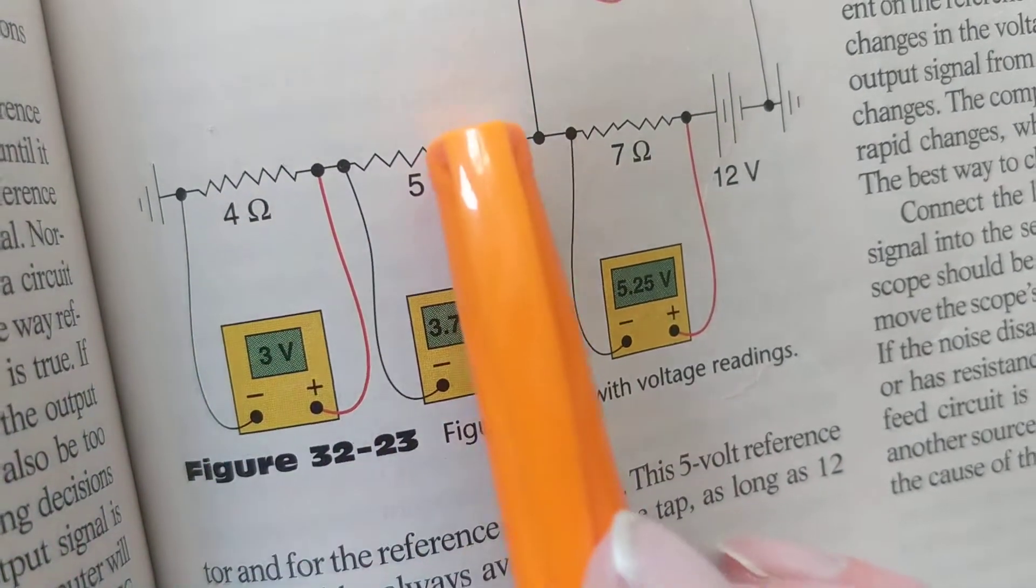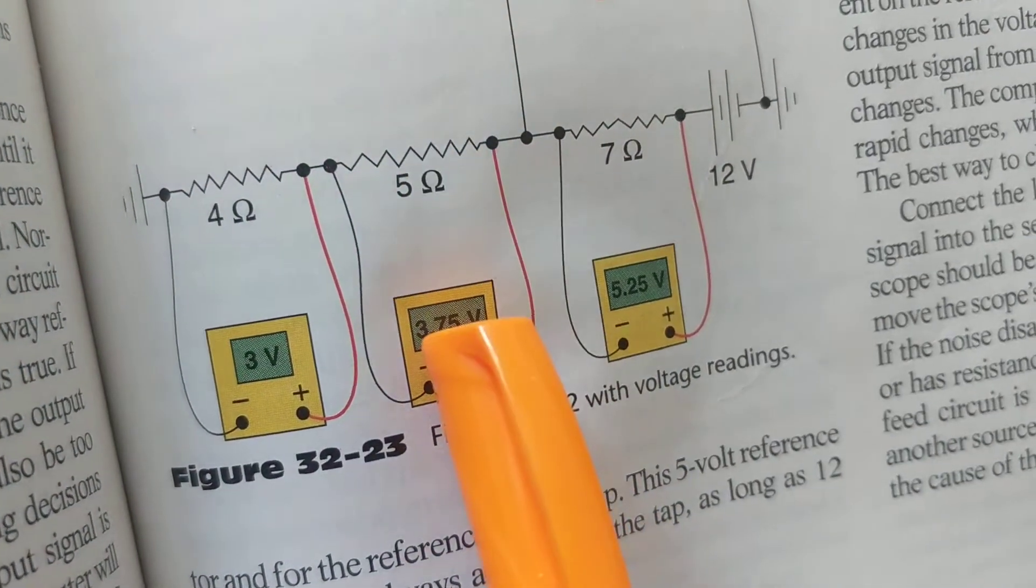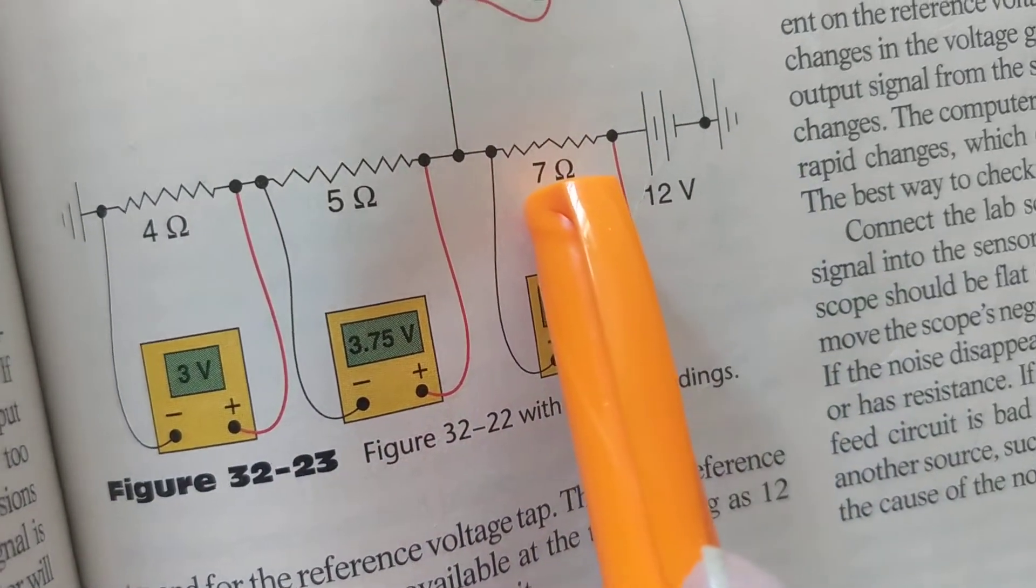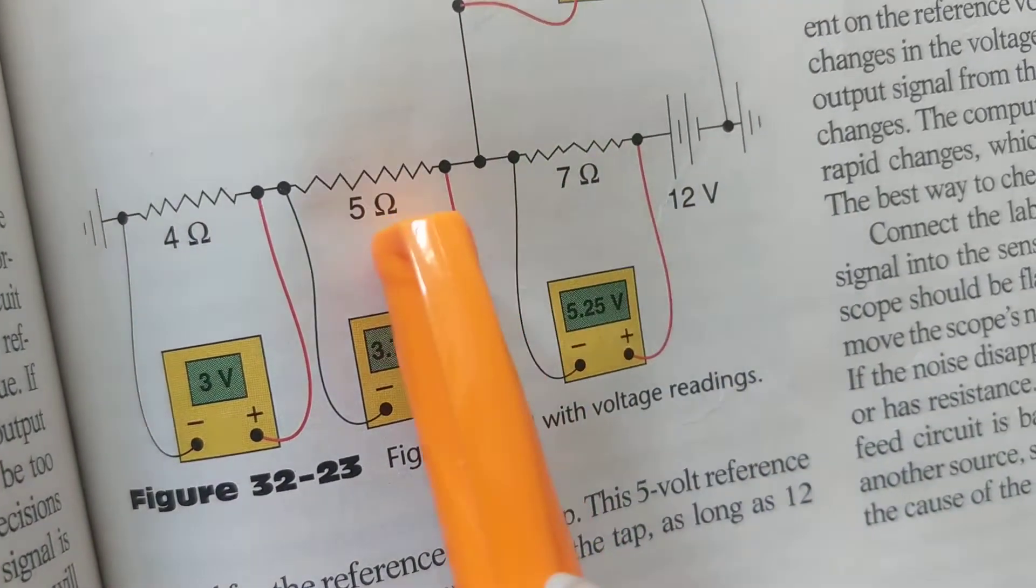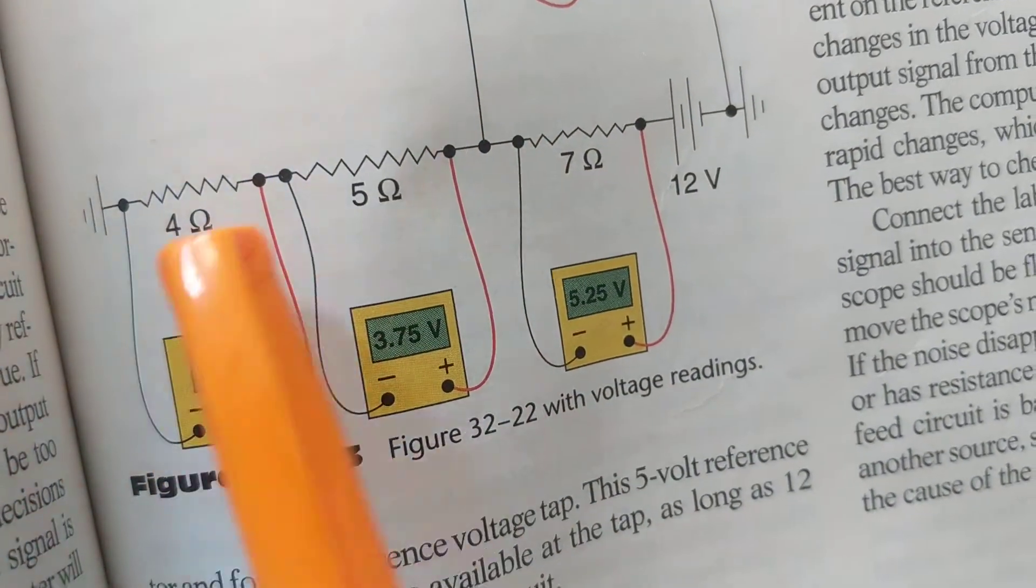I would expect this to be more, right? More ohms? It sure is. This is 3 volts, this is 3.75 volts, almost 4 volts. That makes sense. What would you expect this one to be? More than this one? The answer is this should be more than this one and this one.